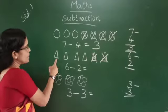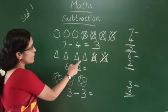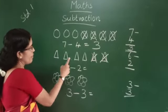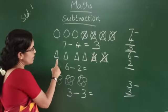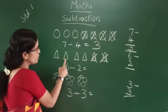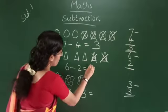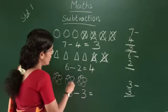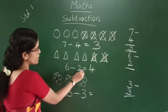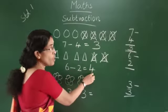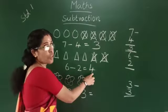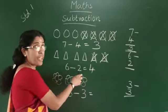How many triangles are remaining? 1, 2, 3, 4. 6 minus 2 is equal to 4. Ok?